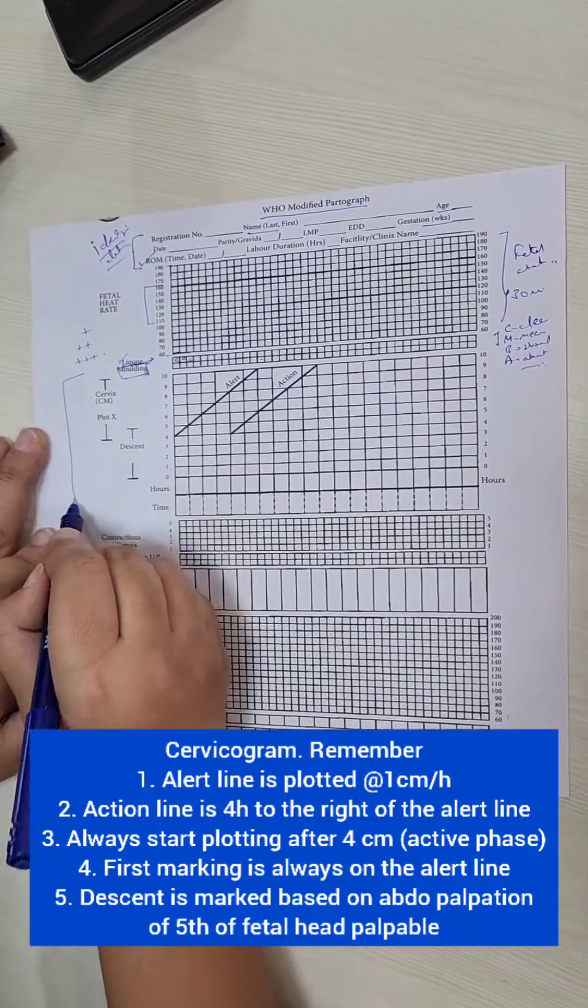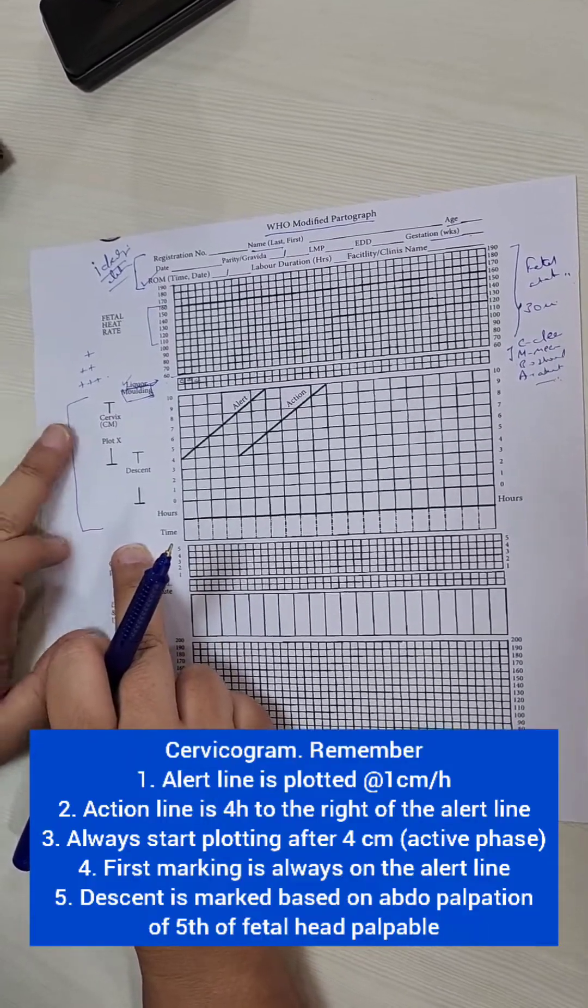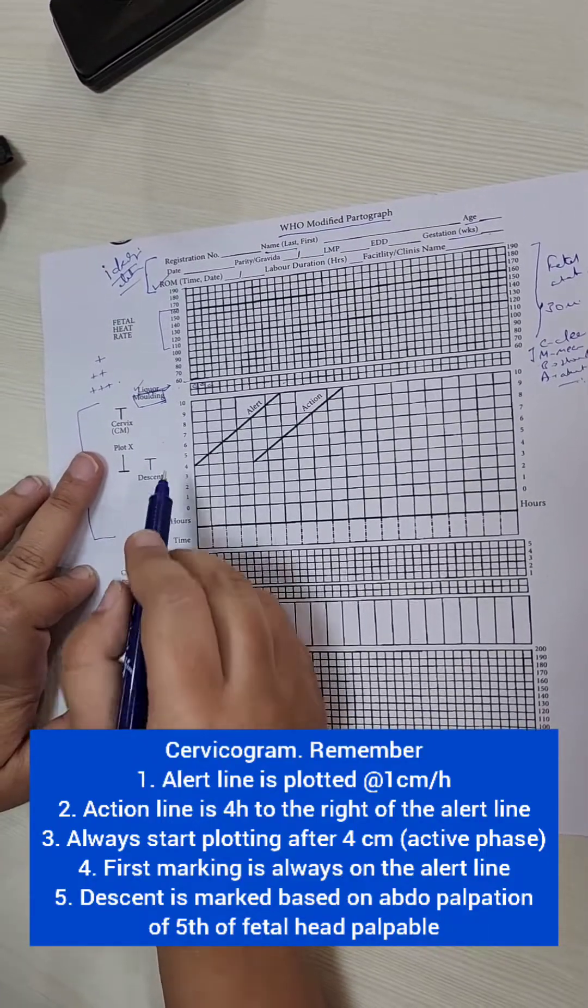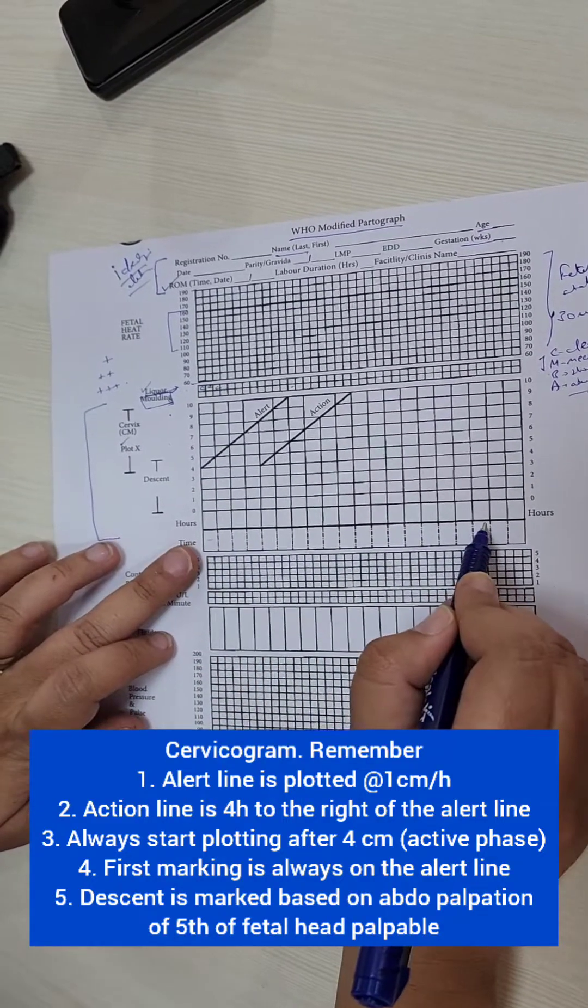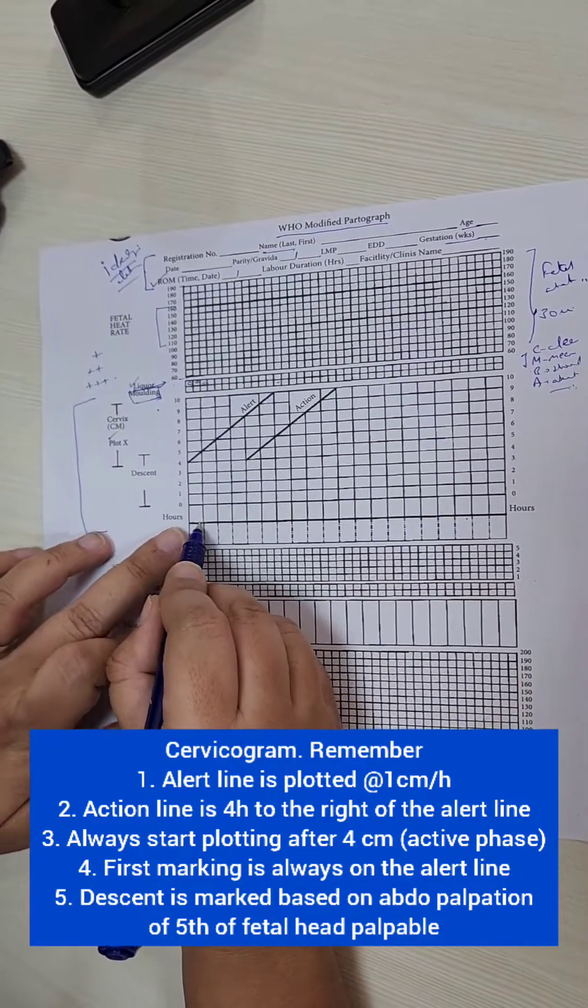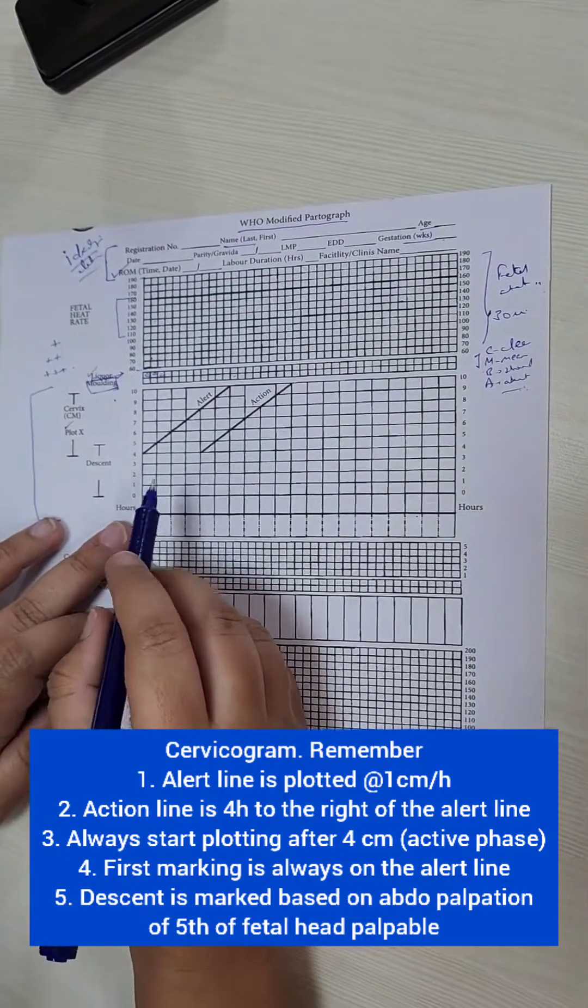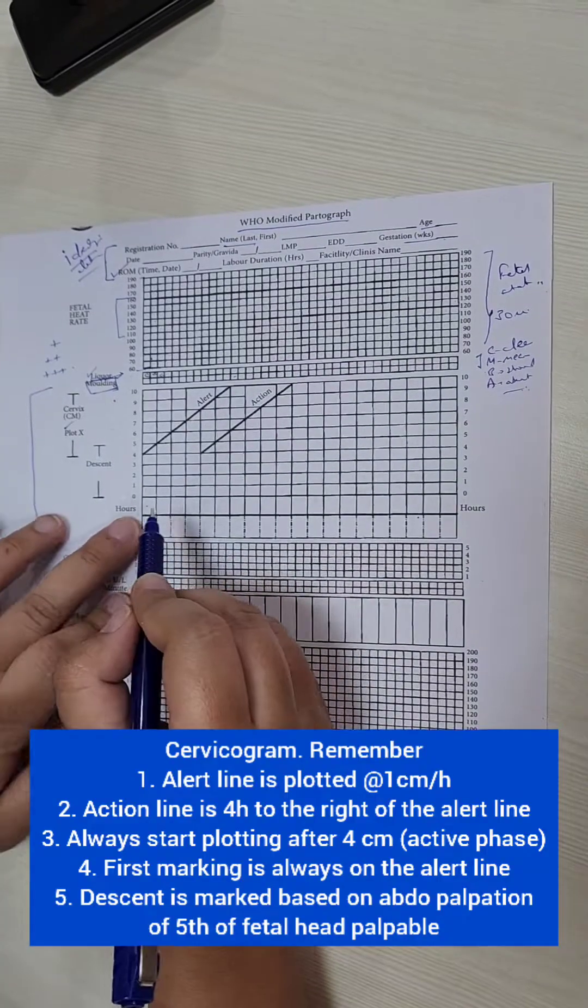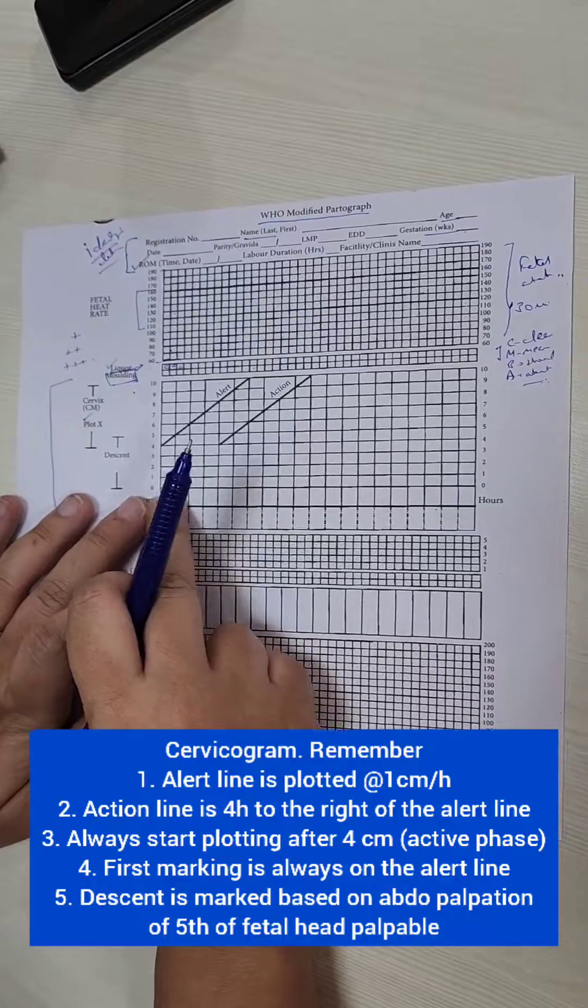Now the main part of the partogram is the cervicogram. And this is this part of the partogram which is basically cervical dilatation which is on the y-axis plotted against time which is on the x-axis. So you can see here these are big boxes. Each big box is 1 hour and the smaller boxes here were 30 minutes.